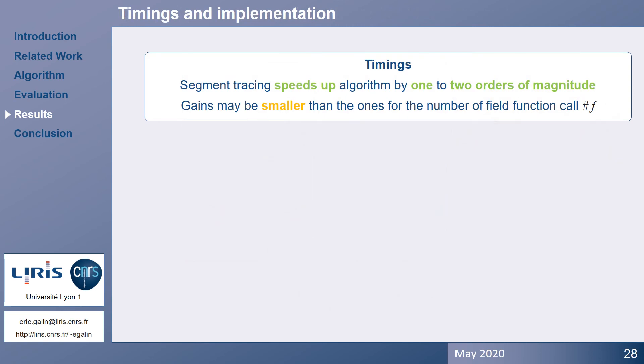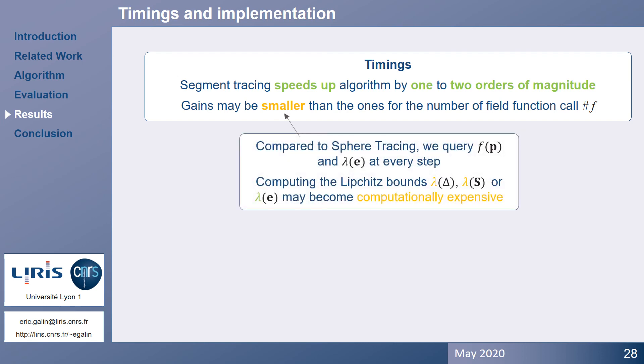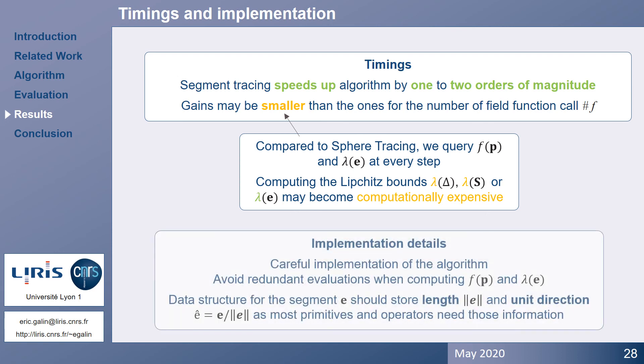Segment tracing also speeds up the algorithm by one to two orders of magnitude, reducing the number of field function queries that not necessarily improve computation time by the same amount. The accurate Lipschitz bound computation comes at the price of extra queries. The ray algorithm requires one bound computation for the entire ray and multiple field function evaluation, whereas the sphere and segment algorithm require multiple queries to evaluate both f and lambda at every step.